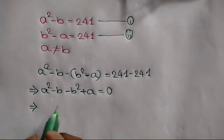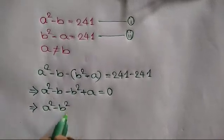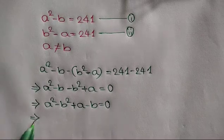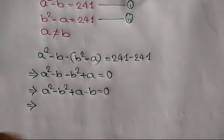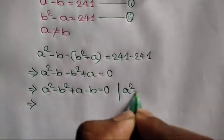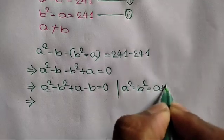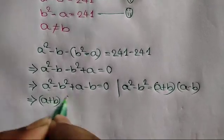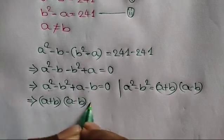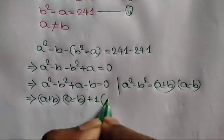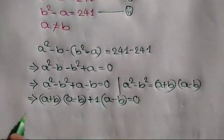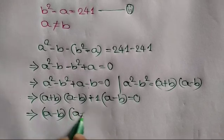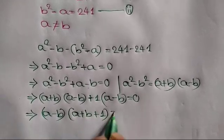Rearranging the left side, we can write A squared minus B squared plus A minus B is equal to 0. Applying the formula A squared minus B squared equals A plus B times A minus B, and taking common 1 from the last two terms, we get: A plus B times A minus B plus 1 times A minus B is equal to 0. Taking common A minus B, we get A minus B times bracket A plus B plus 1 is equal to 0.